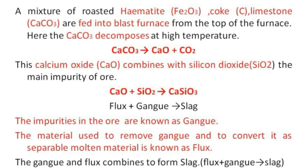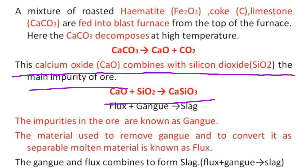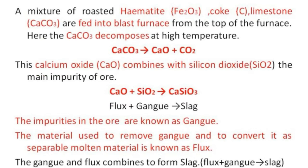At high temperature, calcium carbonate decomposes to give calcium oxide and carbon dioxide. At the bottom side of the furnace, calcium silicate is formed. This is called slag.